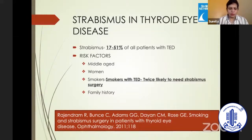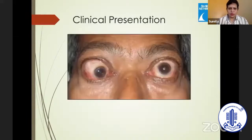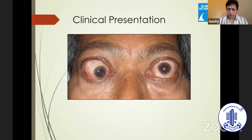Family history and genetics also play a role. The usual clinical presentation includes proptosis, lid retraction, esotropia, and very often compressive optic neuropathy and corneal involvement in severe cases.